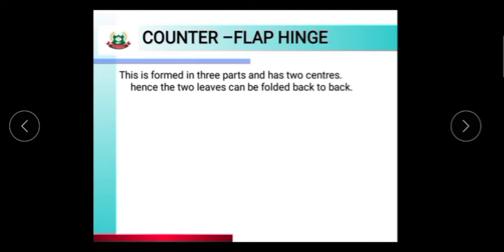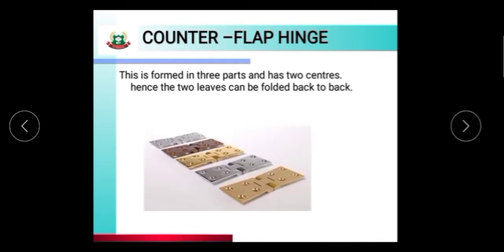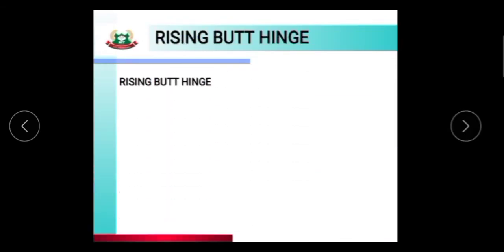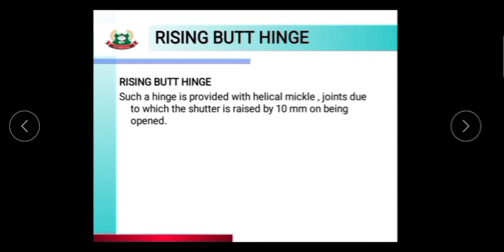The counter flap hinge is formed in three parts and has two centers. Because of this, the two leaves can be folded back to back. You can see in the image that two leaves can be folded back to back.